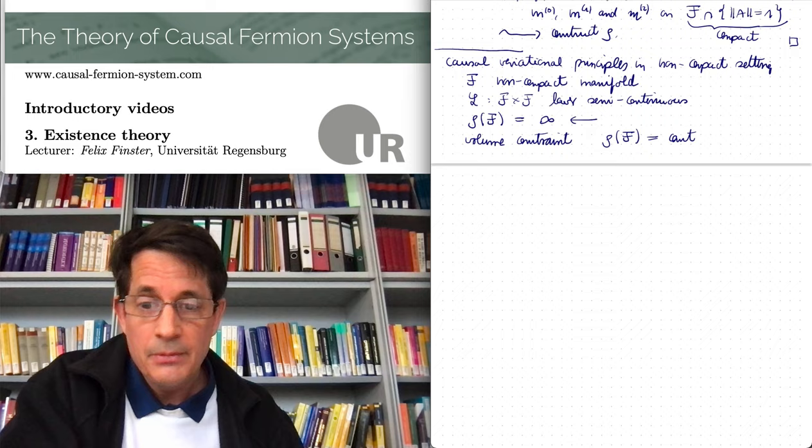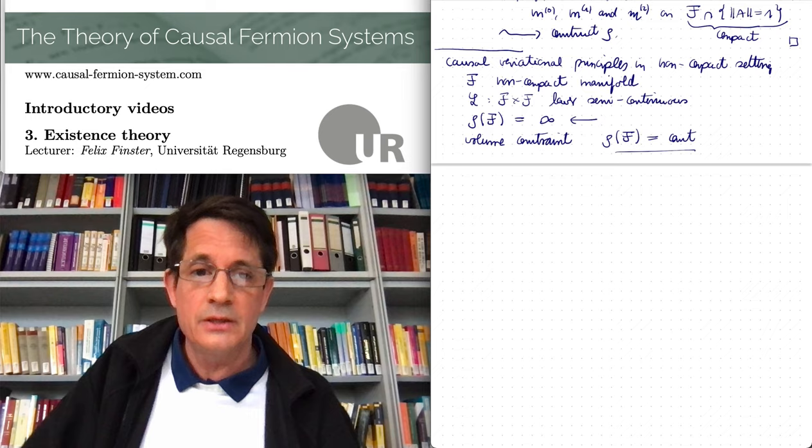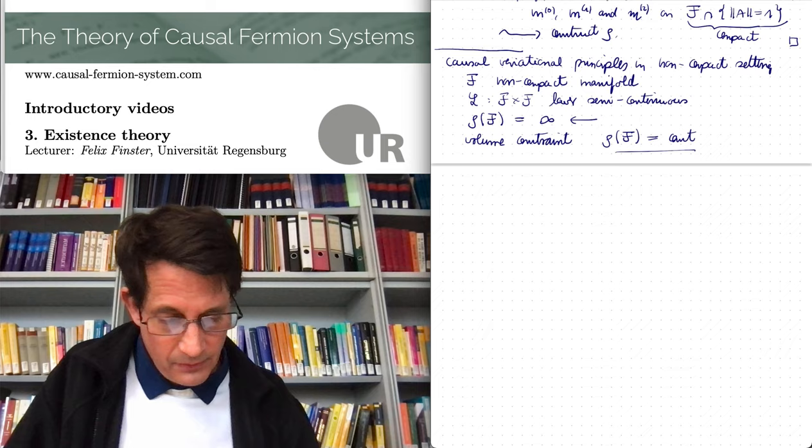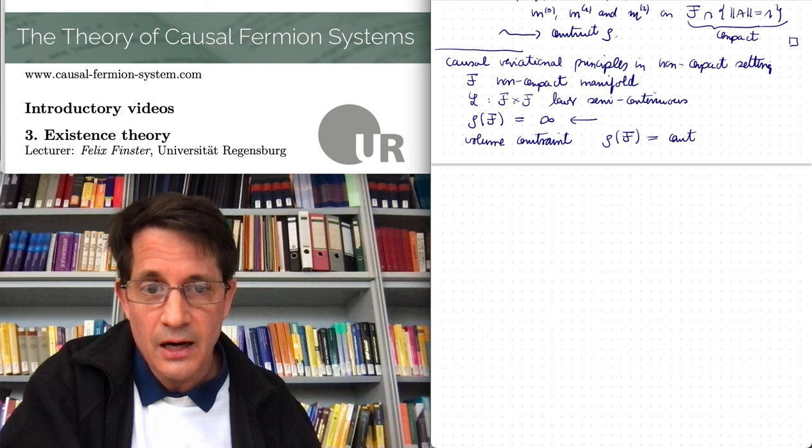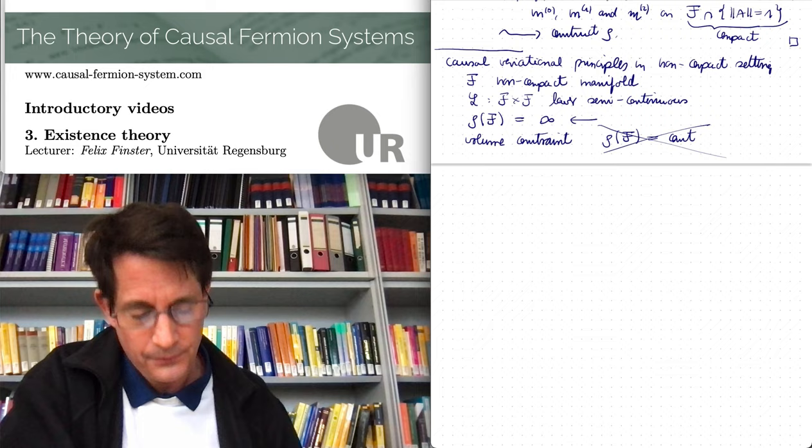Simply because one half times infinity is still infinity. Otherwise, if we say rho of F is equal to constant, we can change the measure by something finite and the total volume is still infinite. So therefore this is like not a good way of writing down the volume constraint. So this is not good.